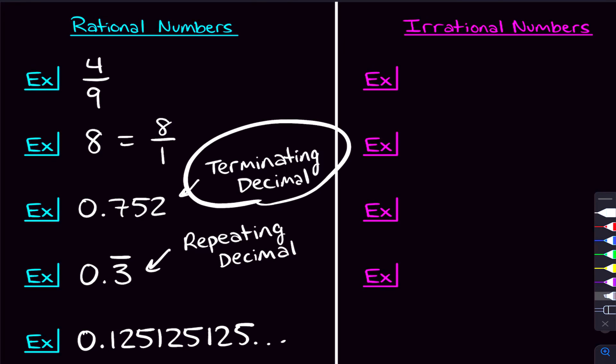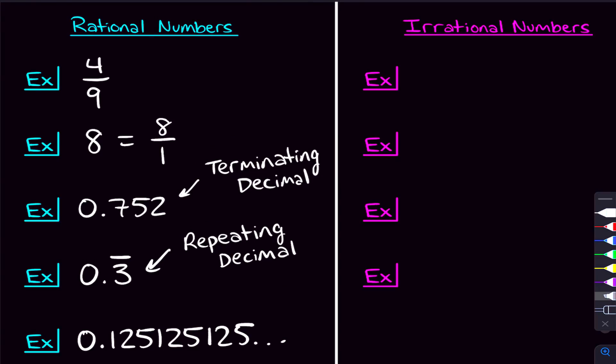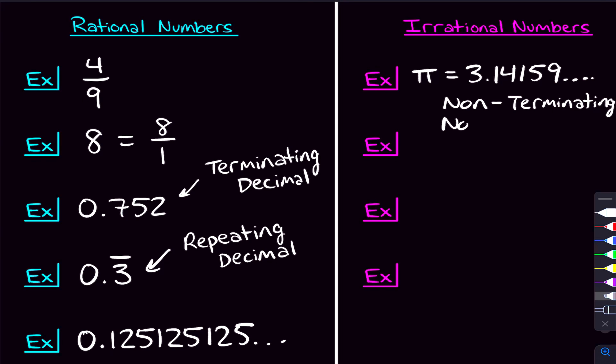Now that we've talked about what rational numbers are, what aren't rational numbers? We've said that rational numbers are decimals that terminate and decimals that repeat. But what happens if they do neither of those — if they go on forever and don't repeat? Well, now we're starting to talk about irrational numbers. The most famous example of an irrational number is pi — 3.14159 — it just keeps going. That decimal doesn't terminate and it doesn't repeat. Those are the qualifications for an irrational number.